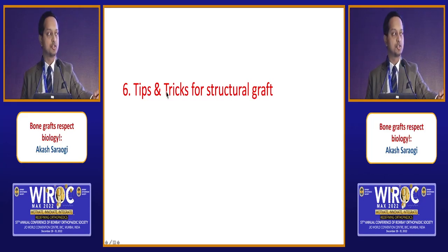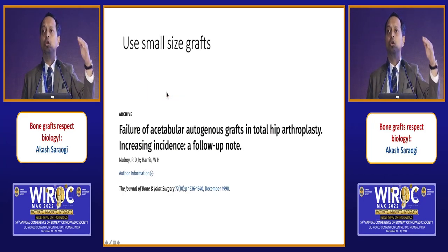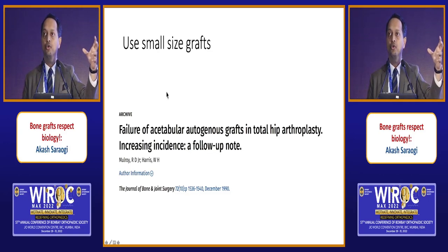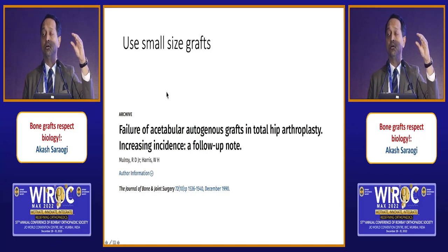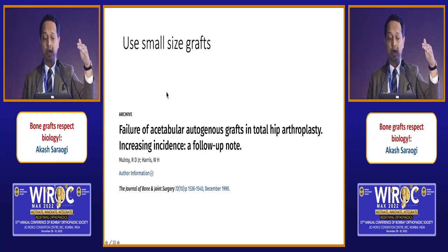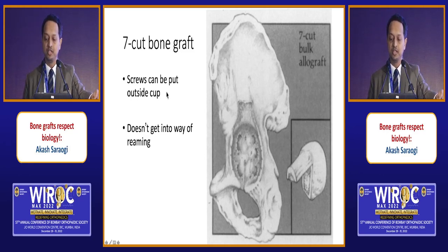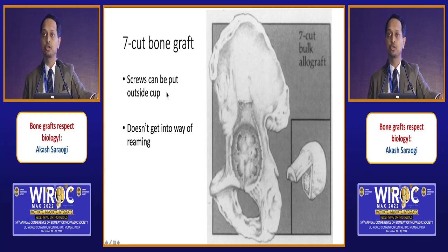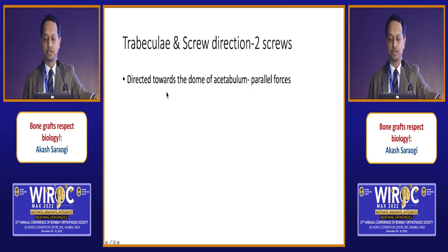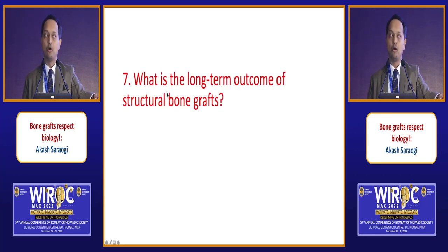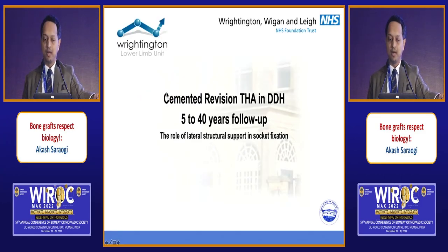Tips and tricks for structural graft: use smaller-size grafts — cut down large acetabular allografts because larger grafts have more stresses. The original Paprosky technique used a seven-shaped cut graft where the hanging part fits on the ilium, allowing screws that do not interfere with reaming. The trabeculae and screw direction should be towards the dome of the acetabulum so the forces are parallel.